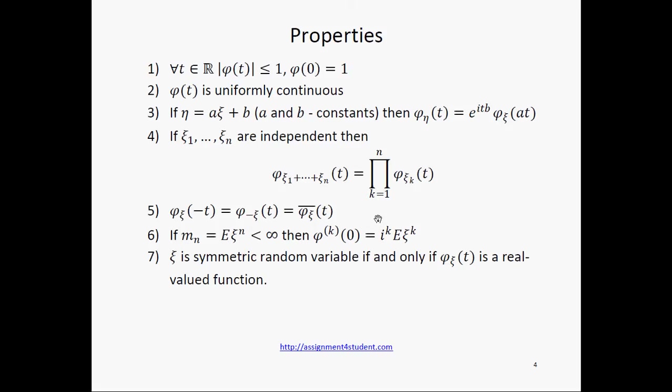The fifth tells us that functions phi xi and phi minus xi are related in the following way. The sixth property allows expressing the expected value of xi to the k-th power. And the seventh tells us necessary and sufficient conditions for any variable to be symmetric.